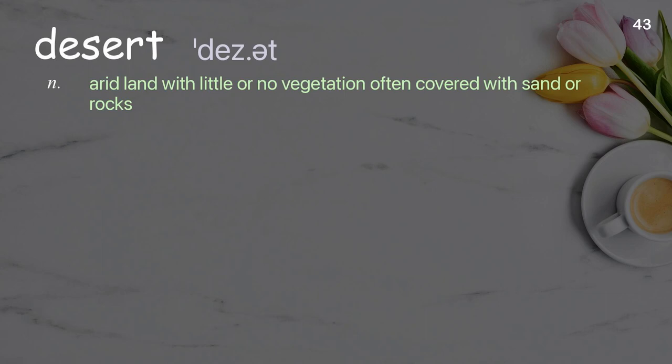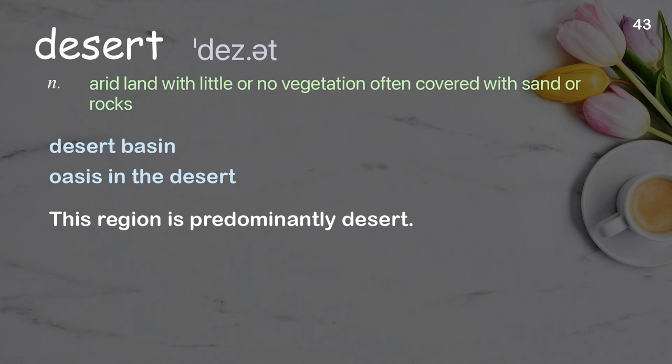Desert: arid land with little or no vegetation, often covered with sand or rocks. Examples: desert basin, oasis in the desert. This region is predominantly desert.